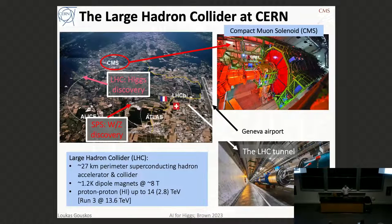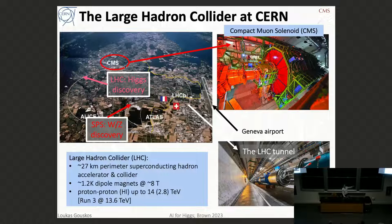One of the biggest reasons we built the LHC, the Large Hadron Collider, at CERN was to discover the Higgs boson. The LHC is located at CERN. You can see the lake of Geneva and the airport, with the white lines showing different accelerators. The SPS is where the W and Z bosons were discovered around 40 years ago. The larger circle is the LHC tunnel with a perimeter of 27 kilometers. Ten years ago, we discovered the Higgs. There are four big experiments: ALICE, ATLAS, LHCB, and CMS. ATLAS and CMS are the two general-purpose experiments — I'm working in CMS.